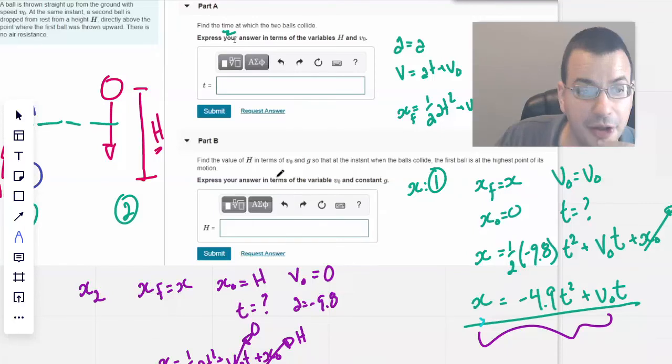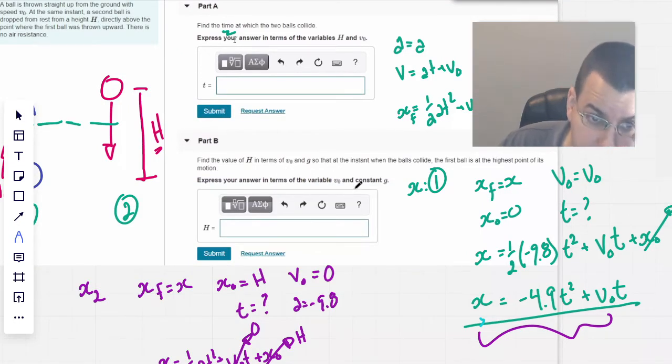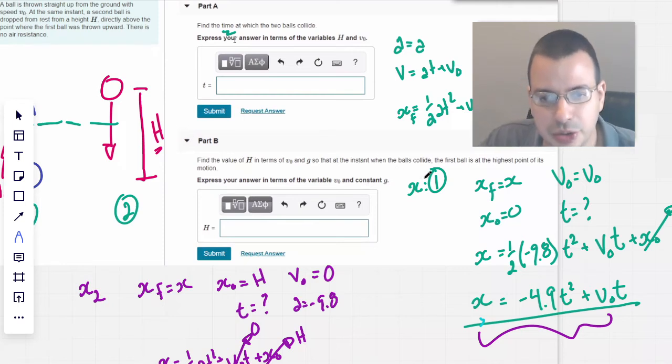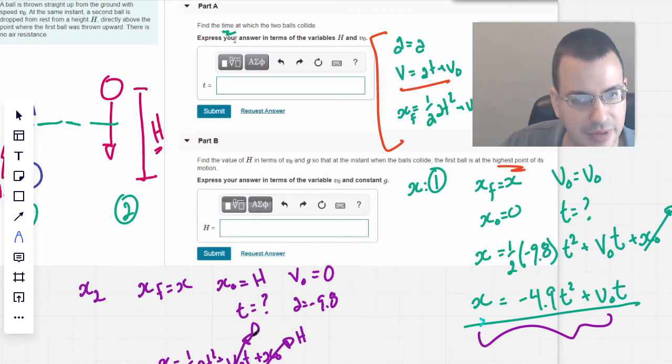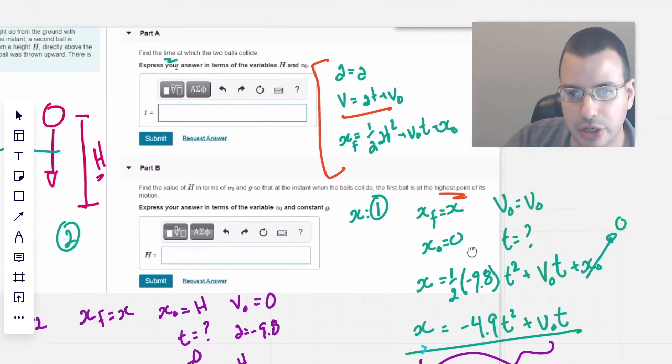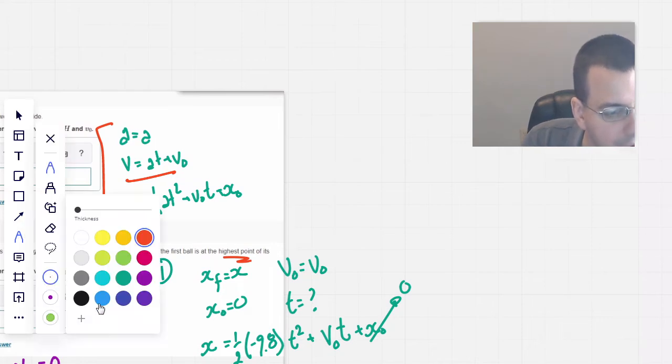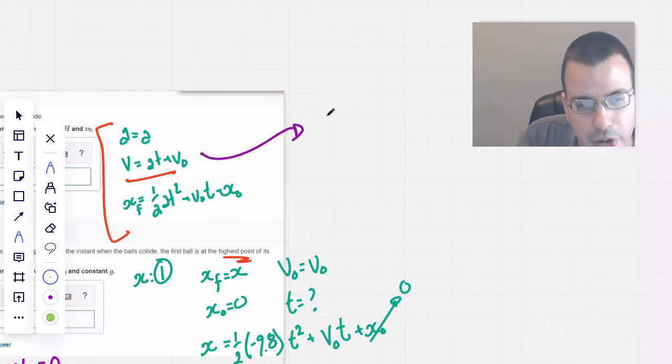Now for the second part, find the value of H in terms of V0 and G, G for gravity. So that the instance when the balls collide, the first ball is at its highest point of its motion. Okay, so we have our three kinematic equations here. And we used the third one. Now we're going to use the second one. Velocity equals at plus V0. And we're going to use it for the ball that's on the bottom, ball number one. And we know that at the top of its trajectory, of its motion, its velocity is going to be zero. So we're going to go over here, a little sidebar. So I'm going to rewrite this equation for ball number one, the one that's being thrown upwards. So V final equals at plus V0.